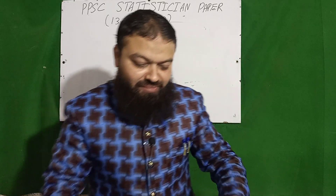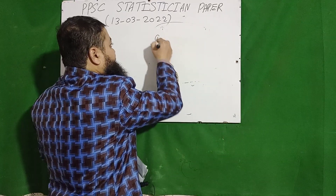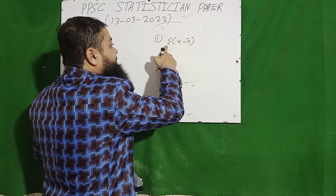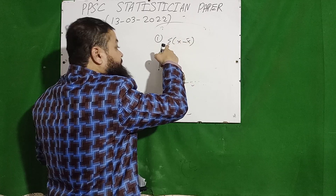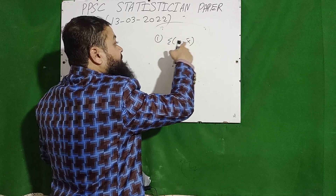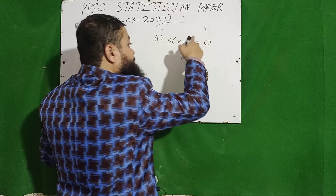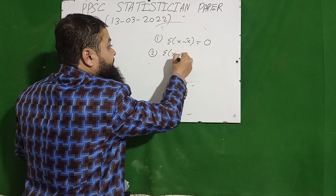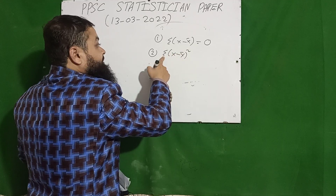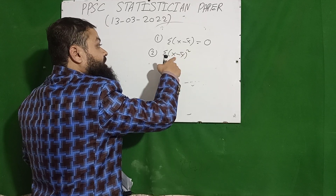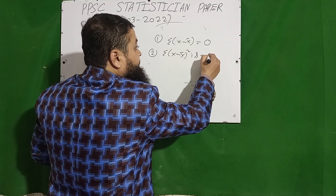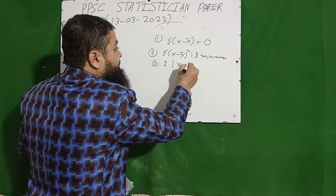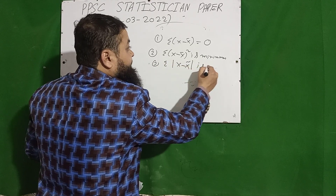Question number one: the sum of the deviations of the values when taken from the mean is always equal to zero. A second concept: the sum of the squared deviations of the values from their mean, Σ(x − x̄)², is minimum. The third concept: the sum of the absolute deviations taken from the median is minimum. Very important concepts for all the papers.